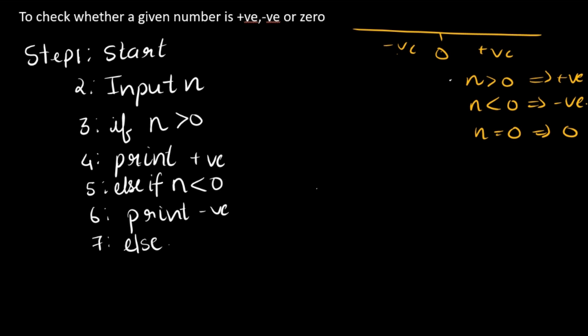Okay, so this step is else. Now here we don't have to write anything because else, right? If this is in the case then it has to be this case naturally, right? So we don't have to write that. Print zero and that is it, right? Last step nine is stop.